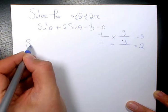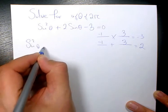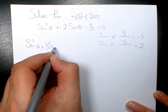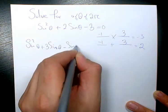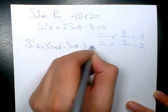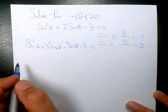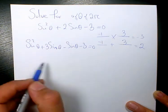So we have sin²θ + 3sinθ - sinθ - 3 = 0. Then, I need to solve it by group factoring.